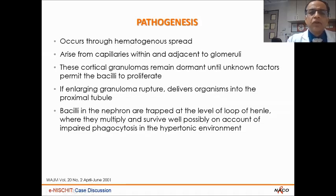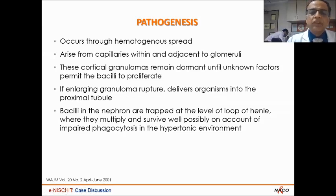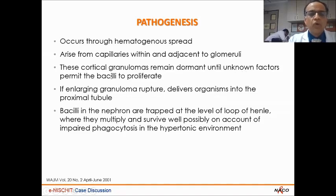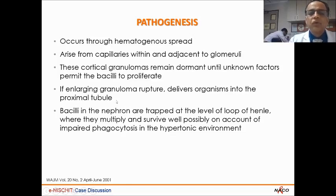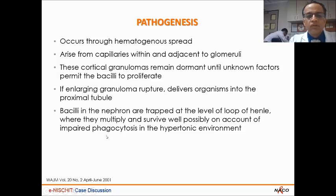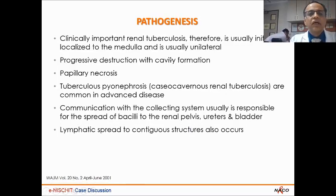How does tuberculosis affect the kidney? It occurs through haematogenous spread. The kidney is a vascular organ with large, medium, and small blood vessels down to capillaries. Granulomas arise from the capillaries within and adjacent to the glomeruli. These cortical granulomas remain dormant until unknown factors cause bacterial proliferation. If the enlarging granuloma ruptures, it delivers organisms into the proximal tubule and thereafter into the urine — which is what we pick up when we look for urine AFB. Bacilli are trapped at the level of the loop of Henle, where they multiply, possibly due to impaired phagocytosis in a hypertonic environment.